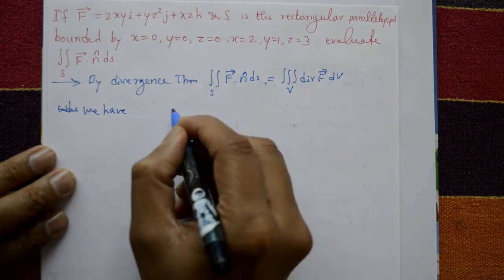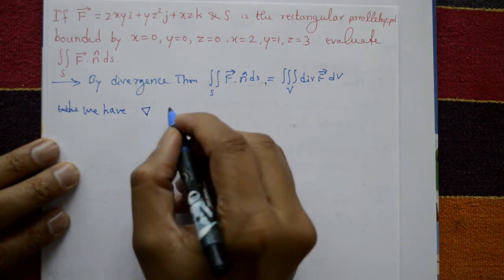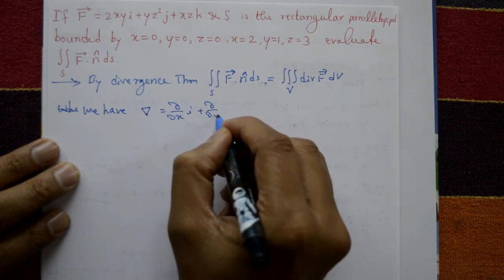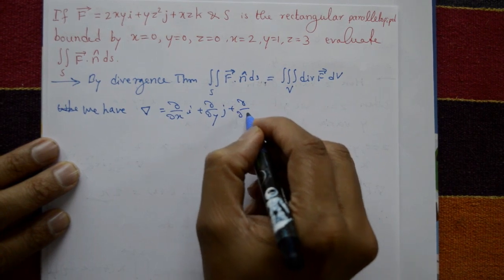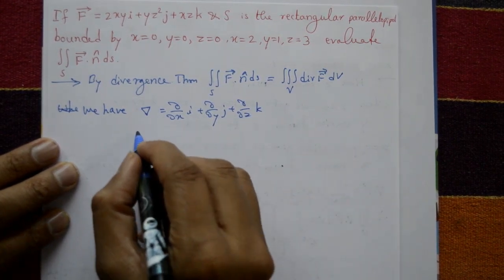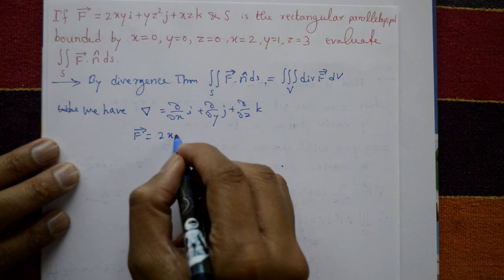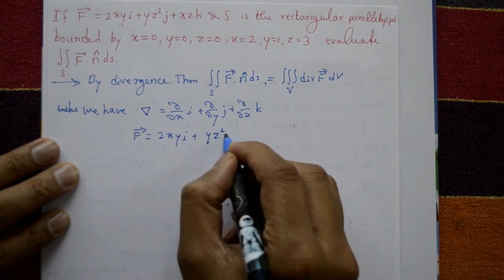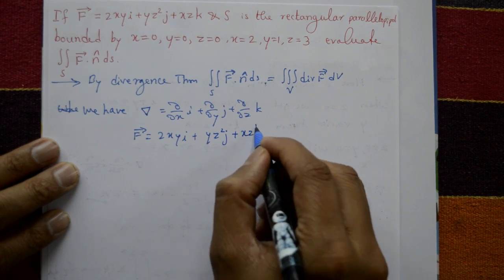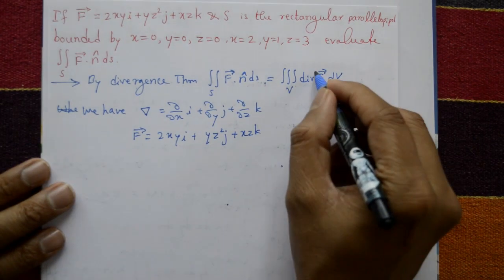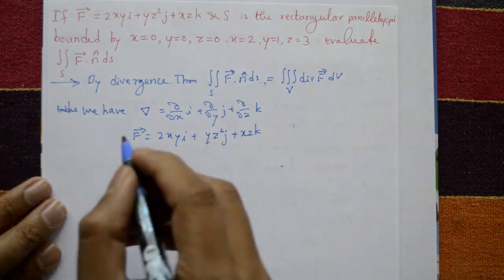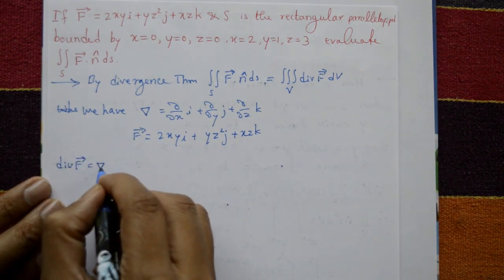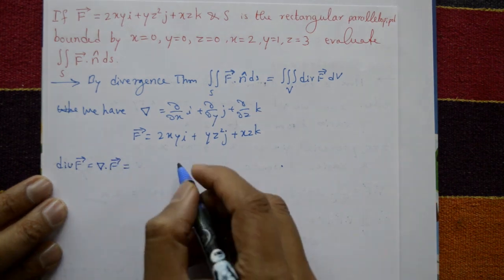So we have del, the divergence operator, which is (∂/∂x)i + (∂/∂y)j + (∂/∂z)k. And vector F is given as 2xy i + yz² j + xz k. Now first we evaluate del dot F, the divergence of F.